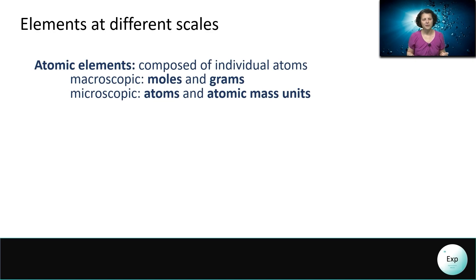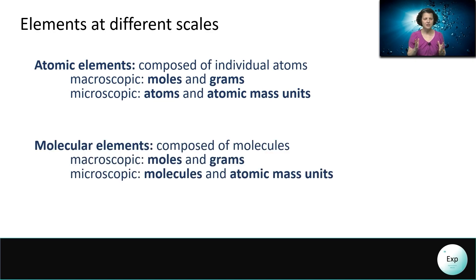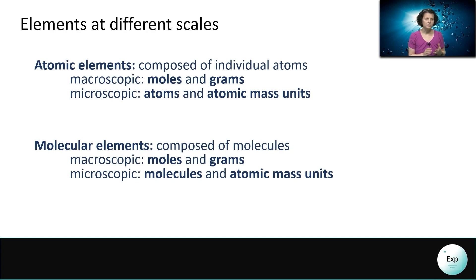Some elements are molecular, which means that we have two or more atoms forming a molecule, and those molecules will then make up our element. Because there is only one type of atom involved, but in larger packages, we still call them molecular elements. On the macroscopic scale, we will talk about moles and grams. And on the microscopic scale, we will be talking about molecules and atomic mass units.